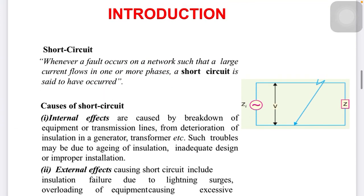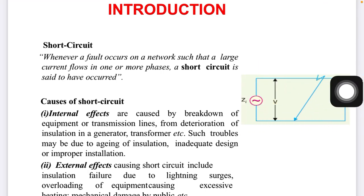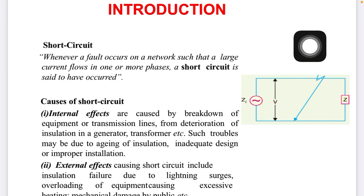Before starting the different types of faults on the power system, we need to understand what basic faults are, like short circuit and single line to ground fault. A short circuit occurs on a network — a system with many different interconnected junctions and lines. Short circuit means whenever a fault occurs on the network such that large current flows; it may be one phase or more than one phase. The current is not utilized by the load but goes directly to the neutral of the source — that is called a short circuit.